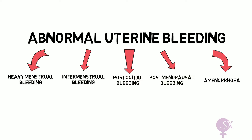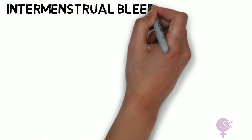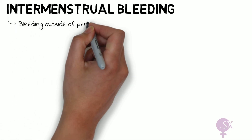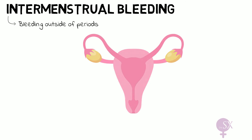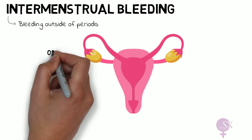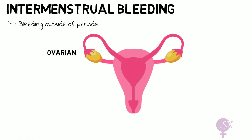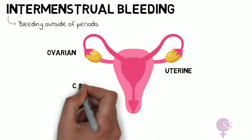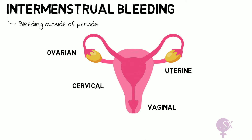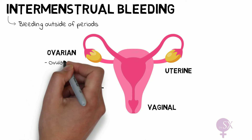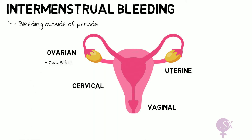Starting off with intermenstrual bleeding: IMB essentially refers to bleeding outside of a woman's periods. There are a number of causes and we're going to classify these according to their anatomical site, so we've got the ovarian, uterine, cervical, and vaginal causes. Starting with the ovarian causes, we have ovulation, because one to two percent of women will have spotting.